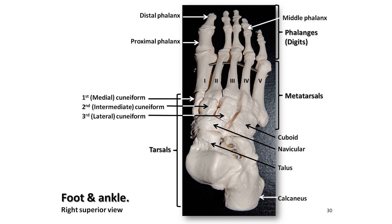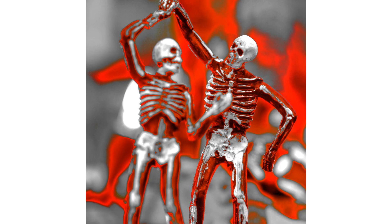Welcome to this video on the skeletal system. In this video we will be discussing the different types of bones in the human body, their functions, and how they work together to support our body. Bones are an essential part of our body, providing structure, support and protection to our vital organs.